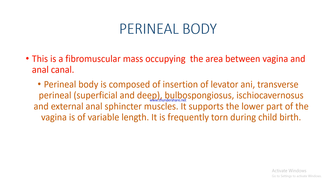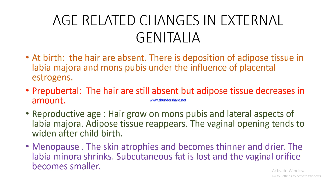The perineal body is a fibromuscular mass occupying the area between the vagina and anal canal. It is composed of the insertion of levator ani, the transverse perineal muscles (superficial and deep), bulbospongiosus, ischiocavernosus, and external anal sphincter muscles. It supports the lower part of the vagina and is of variable length. It is frequently torn during childbirth.